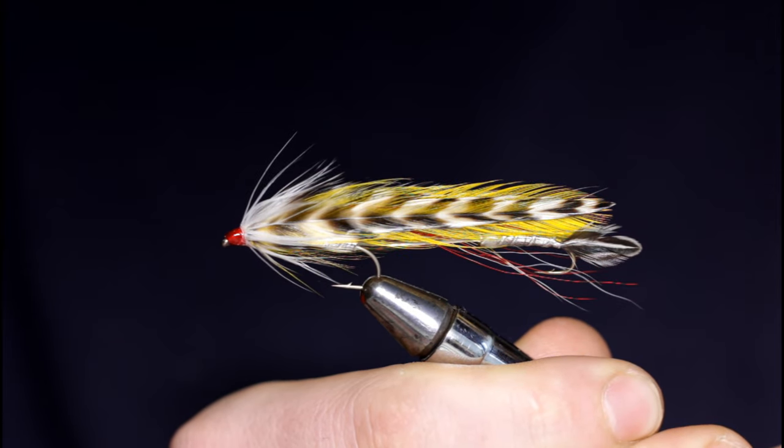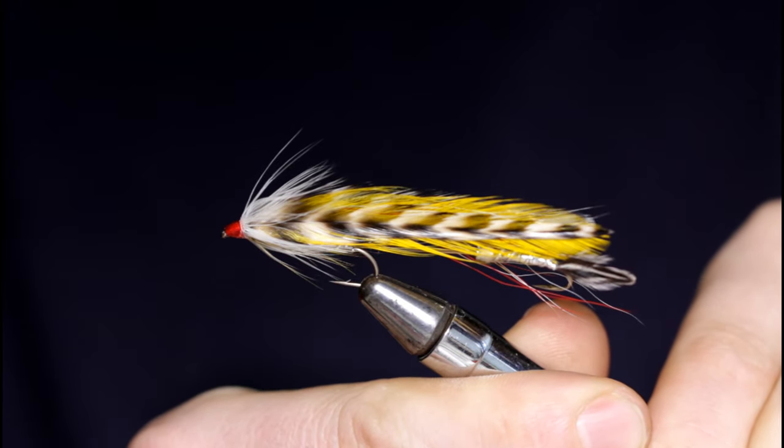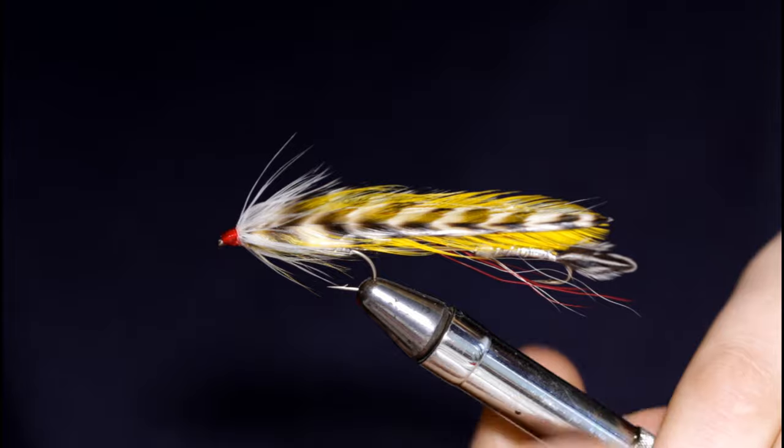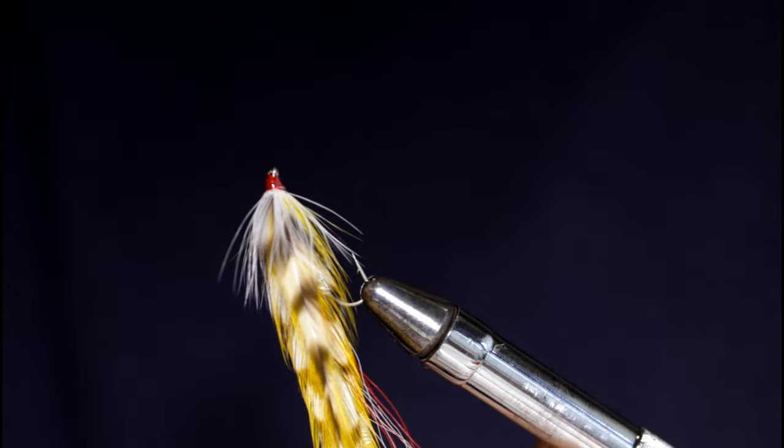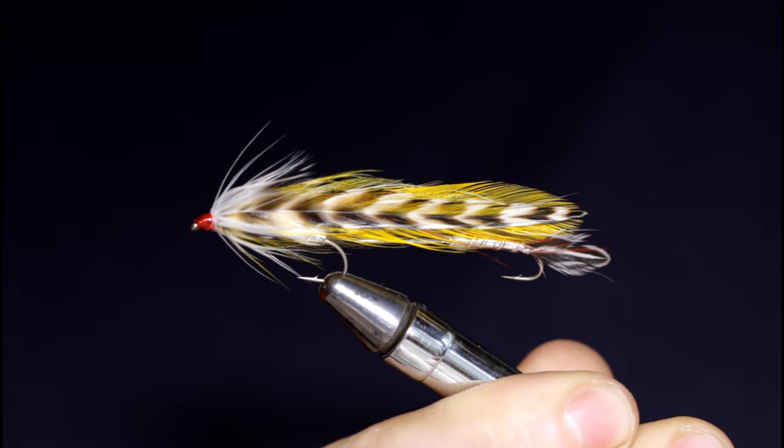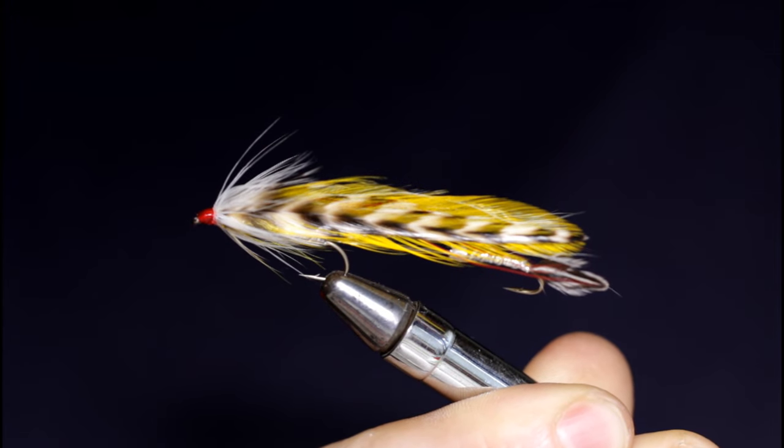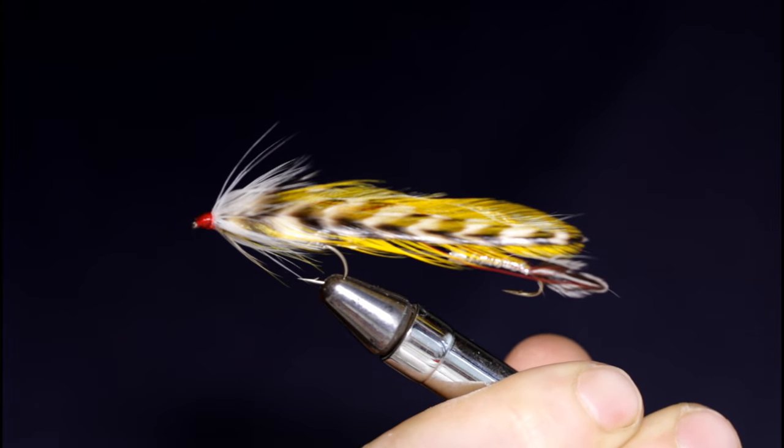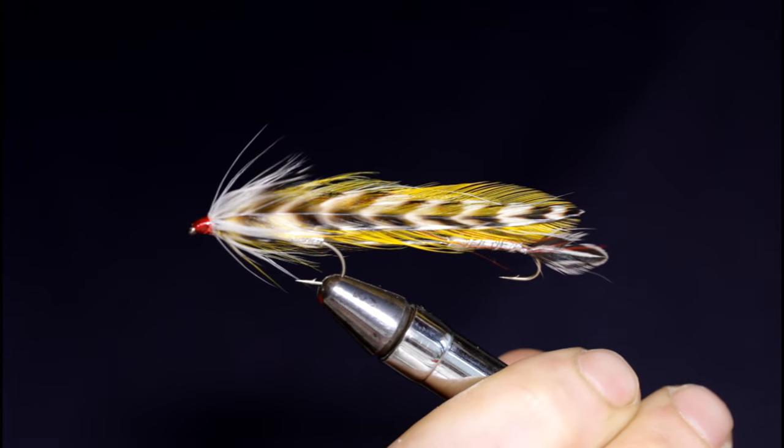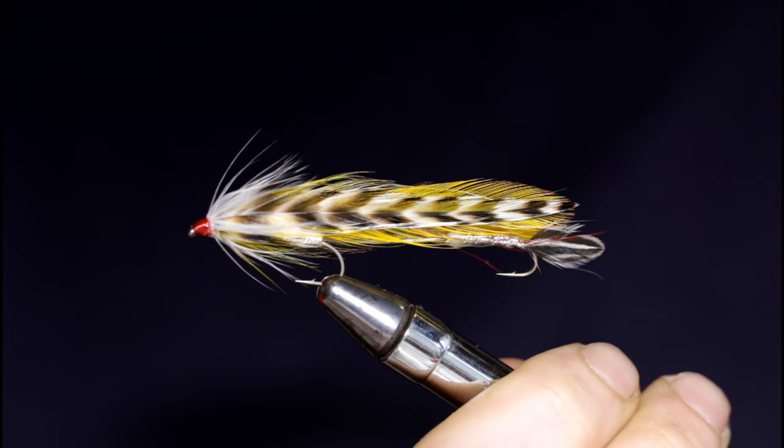And you know, fish pick up on vibrations, so that's one theory on why this fly works so well. The color scheme is suggestive of a yellow perch or other small bait fish. I'm sure some of you have already fished this fly and had success with it. If you haven't, give it a shot.